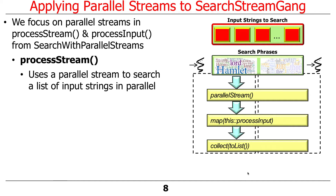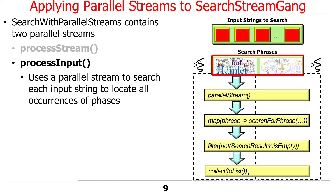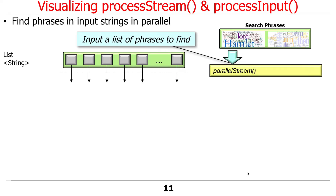The method process stream uses a parallel stream to search a list of input strings in parallel. It's going to take the input strings and run them in parallel, calling a method called process input for each string. The process input method is going to use a parallel stream to search the search phrases in parallel, so we're going to have a number of things going on in parallel at the same time. Let's start with a quick visualization — this will look familiar from the sequential version, but I'll compare and contrast to show what's different in the parallel version.